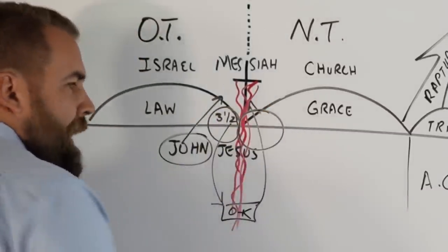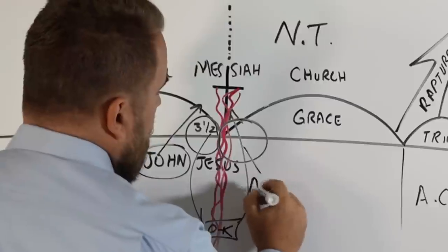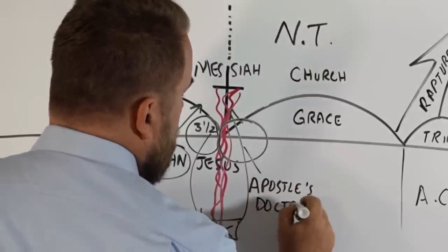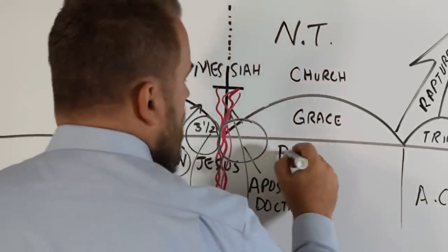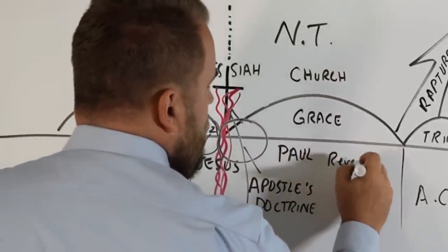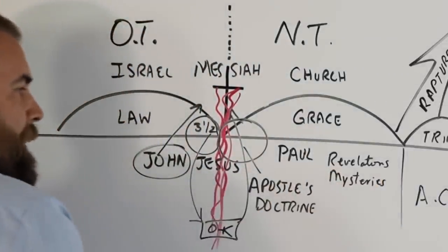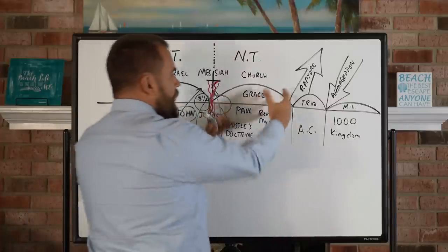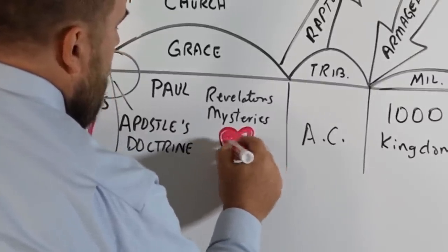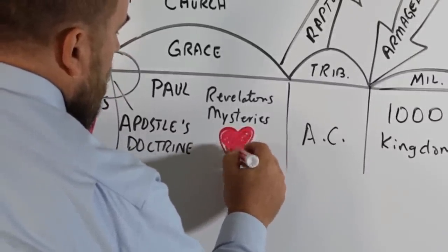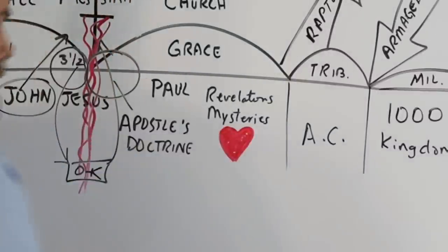Then we see the early book of Acts — which is a transitional book with a lot of changing going on. We see what's called the Apostles' Doctrine, where God was still dealing with Israel and giving them another opportunity to accept the Messiah. But they rejected Him, and so God said, 'Paul, come here,' and gave Paul a bunch of revelations and mysteries. As you read the Bible, it's great to go to the Pauline epistles and see how God revealed so much to him that is for us today — the heart of New Testament doctrine. Have you ever studied that? Have you ever thought about rightly dividing?